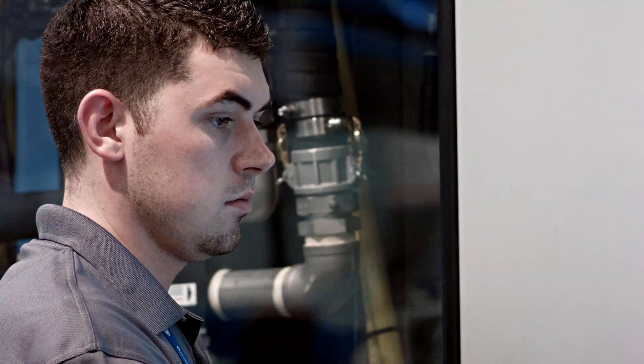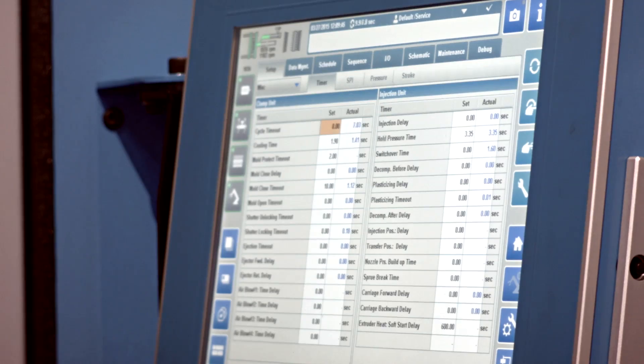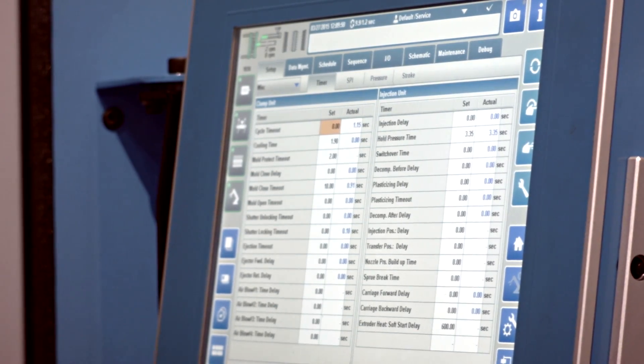The BNR controls platform allows the robot, the hot runner and all the machine functions to be integrated into one control. We're also able to show the dryer and auxiliaries within the control screen as well.